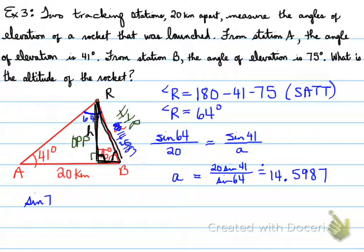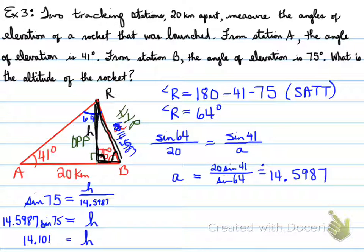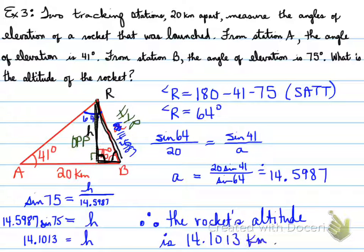SO stands for the sine of 75, which is the angle that the marked angle is 75 degrees. Remember from earlier. Sine of 75 is equal to H, which is the opposite side, over 14.5987. And we solve for H. How do we do that? That's right, we're going to multiply. Because the unknown is on top, we're going to multiply these values. And we get that H is equal to 14.5987 times sine 75. That means that H is equal to 14.1013. So the rocket's altitude is actually 14.1013 kilometers.